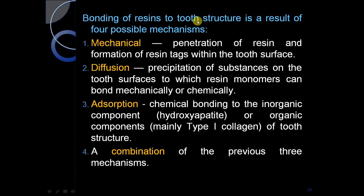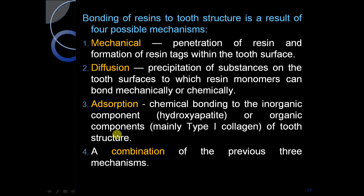Bonding of resin to the tooth structure is a result of four possible mechanisms: mechanical, diffusion, adsorption, and combination. Mechanical involves penetration of the resin and formation of resin tags within the tooth surface. Diffusion involves precipitation of substances on the tooth surface. Adsorption involves chemical bonding to the inorganic component, i.e., hydroxyapatite crystals, or the organic component, mainly type 1 collagen. The fourth is a combination of the previous three mechanisms.